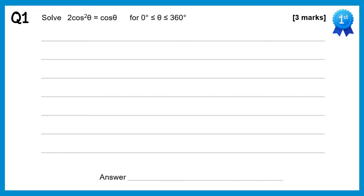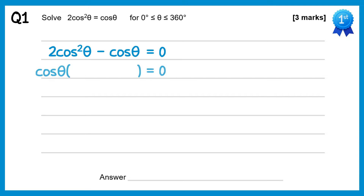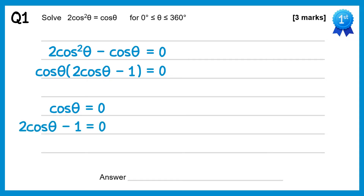We're going to subtract cos theta from both sides. This will give us 2cos²θ minus cosθ equals 0. Now we can factorise out cosθ, so we get cosθ and then a bracket, and inside this bracket is 2cosθ minus 1. This means either cosθ equals 0, or the bracket is equal to 0, so 2cosθ minus 1 equals 0. The second equation rearranges to give cosθ equals 1/2.